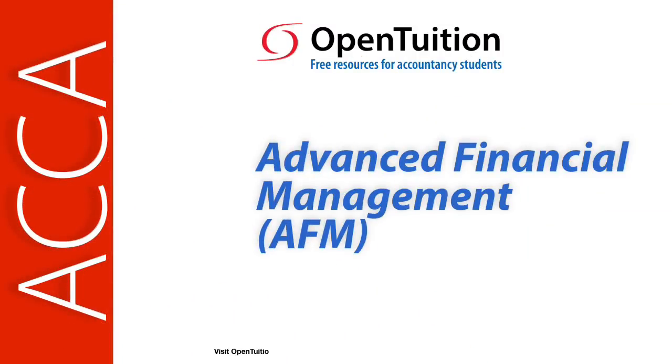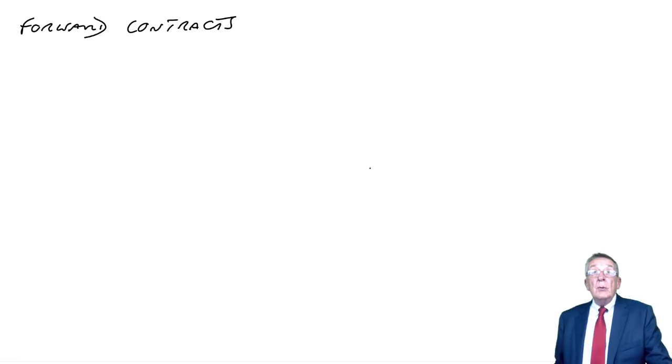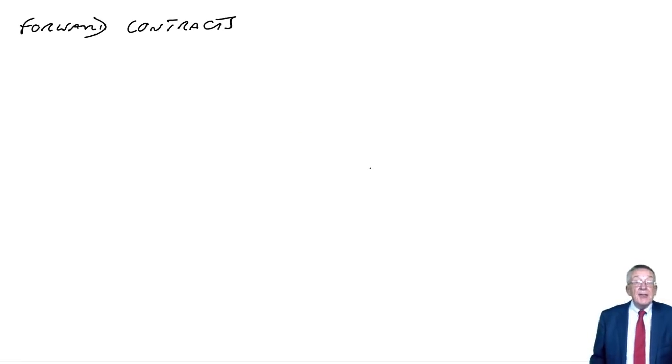This is a lecture from OpenTuition. To benefit from the lecture you should download the free lecture notes from OpenTuition.com. We're doing foreign exchange risk management, and in the last lecture we had a quick look at how we deal with exchange rates in general. I've listed the various methods of reducing transaction risk that you can be asked to deal with in the exam. Now we'll start going through them one by one, the first one being forward contracts.